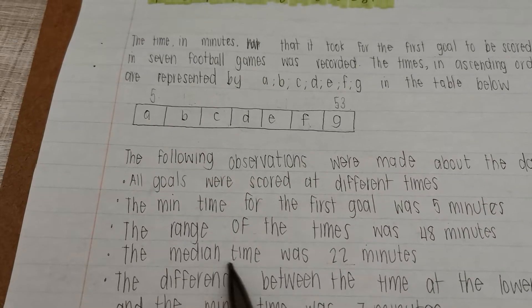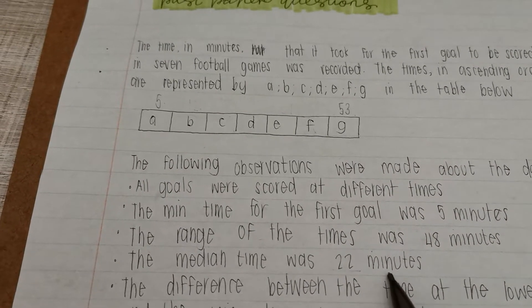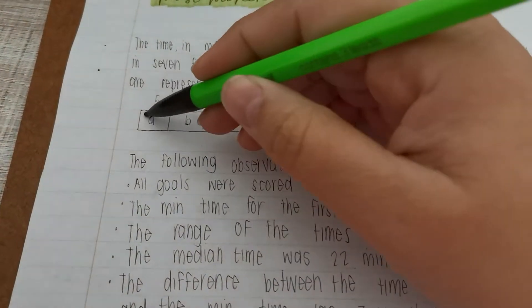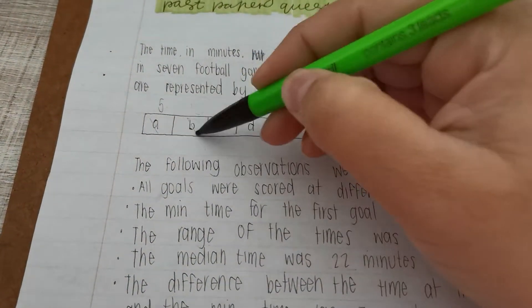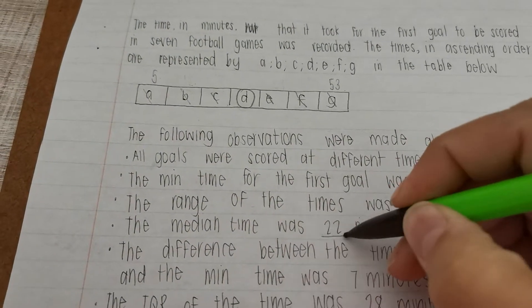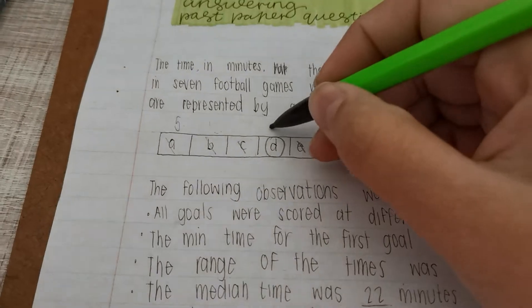Then it says that the medium time was 22. We know that the median is in the middle. I'm going to show you that and that blocked out, that and that blocked out, that and that blocked out. Here's our median, and they're telling us that it's 22. So let's fill that in.